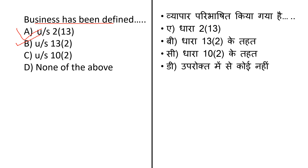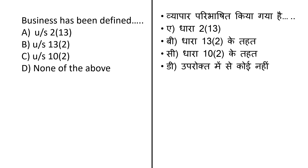Section 13(2) of Income Tax Act deals with if any part of income or property of the trust or institution is lent to any person without adequate security or adequate interest. Third option is Section 10(2), which provides exemption of income received by the taxpayer as a member of a Hindu Undivided Family (HUF). Any income received by an individual as a member of HUF is exempt from tax. The correct answer is option A — business has been defined under Section 2 clause 13.